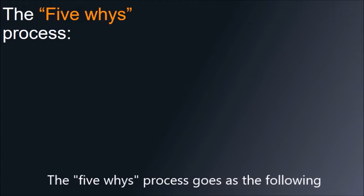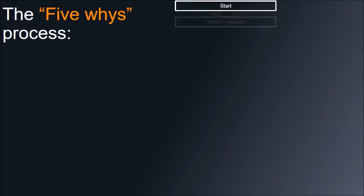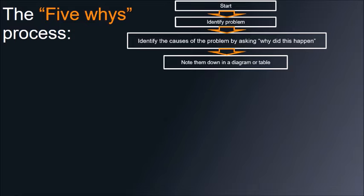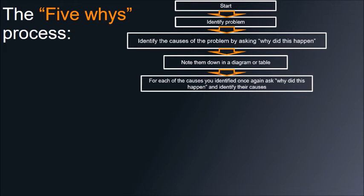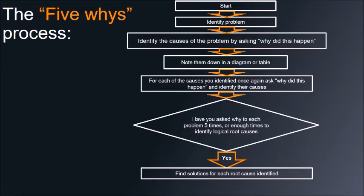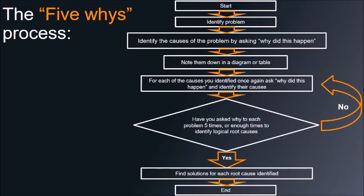The 5-wise process goes as the following. You start by identifying a problem. Then you identify the causes of the problem by asking why did this happen. Note them down in a diagram or table. For each of the causes you identified, once again ask why did this happen, and identify their causes. At this point, have you asked why to each problem 5 times, or enough times to identify logical root causes? If yes, find solutions for each root cause identified. If no, return to the previous step.